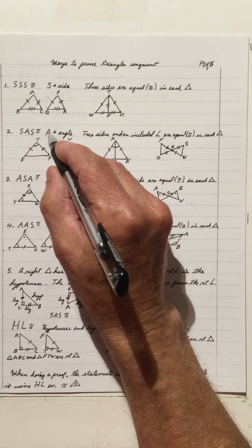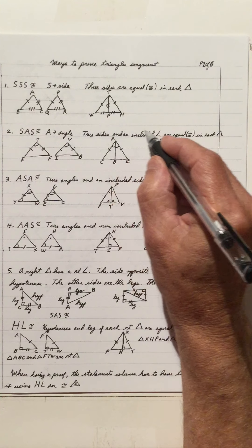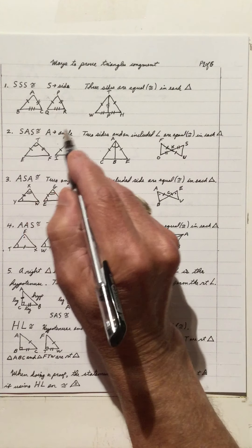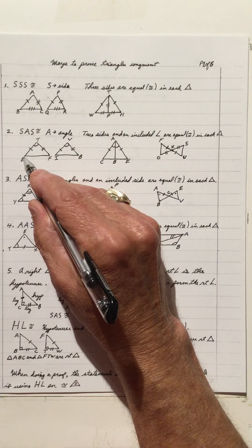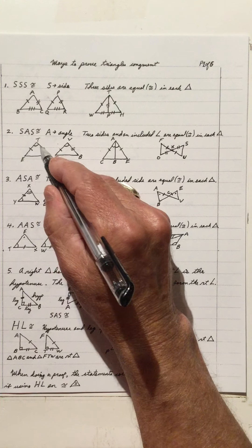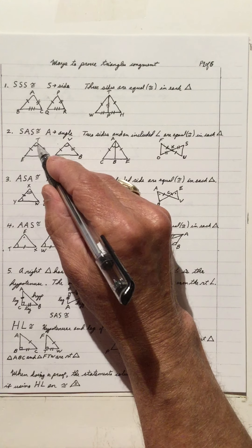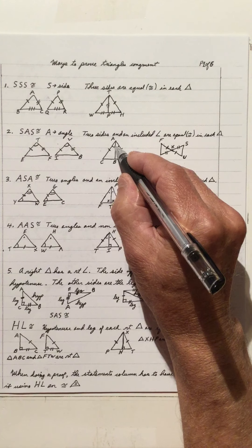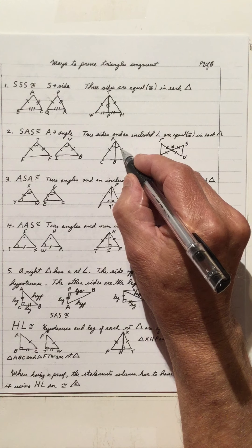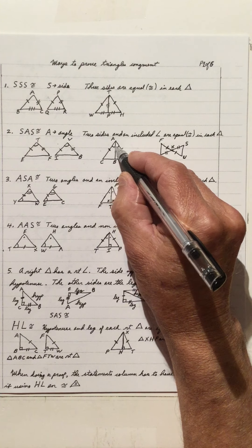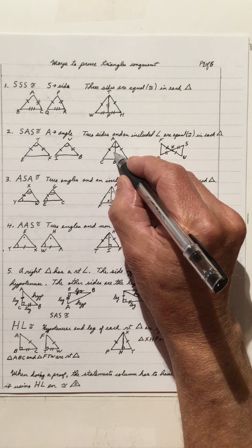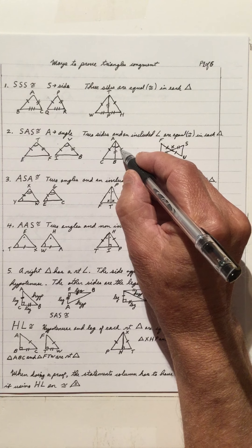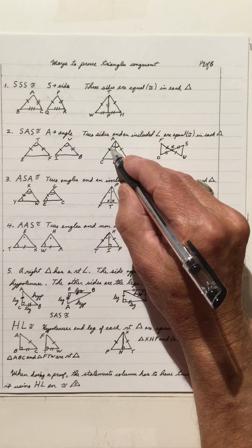Another way is SAS congruency. A stands for angle — two sides and an included angle are equal in each triangle. Notice TE equals VI, TF equals VB, and angle T equals angle V. Side, angle, side. We also have these two sides marked equal, this angle equal to this one, and AB equals AB as a common side — so it's an SAS congruency.